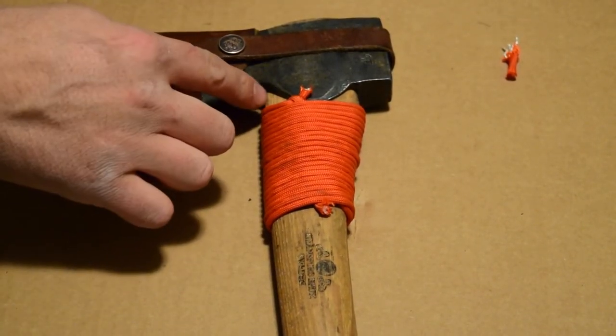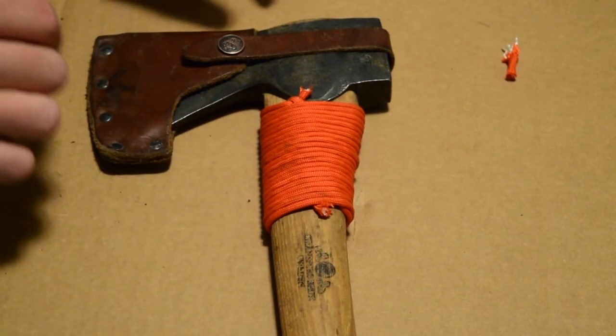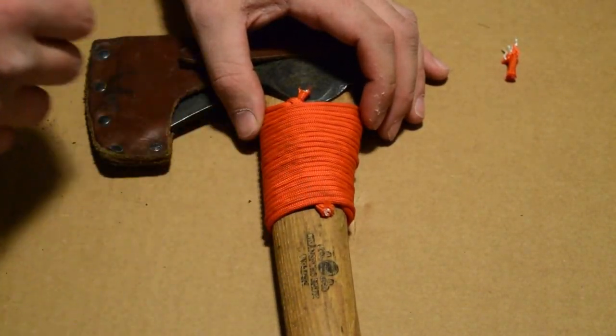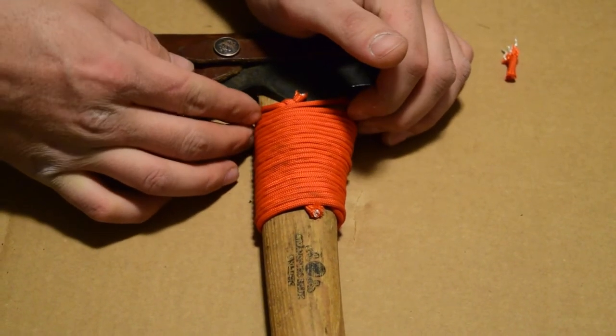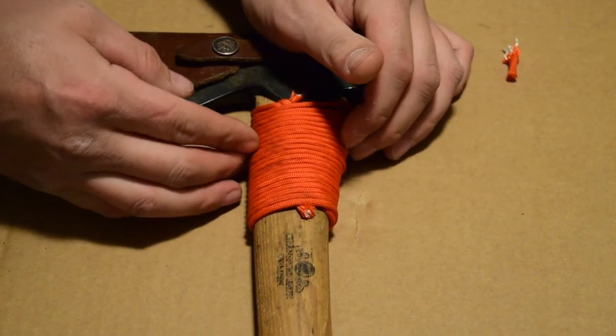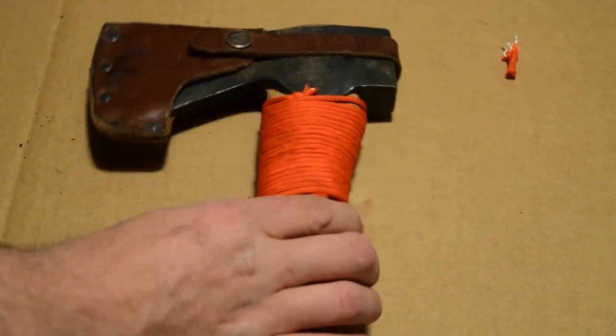And now we can protect our axe from an overswing. And we have an emergency about 10 to 15 feet of paracord. I just want to kind of just go ahead and make that look a little bit nicer. And there you go.